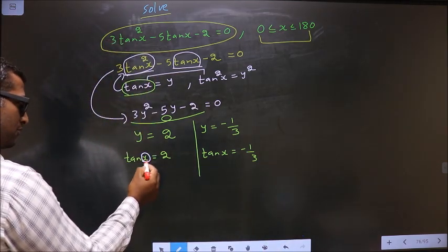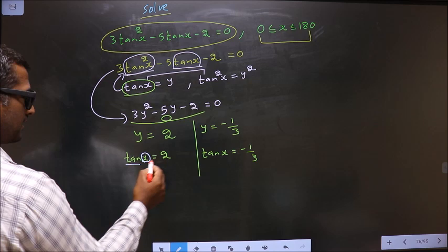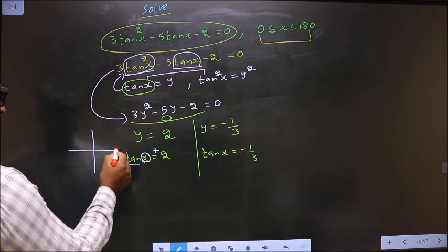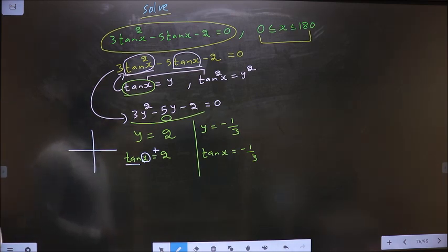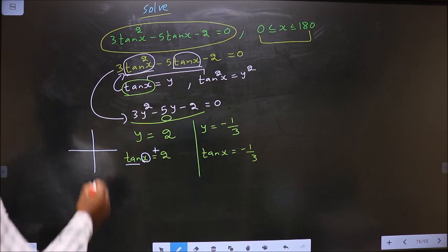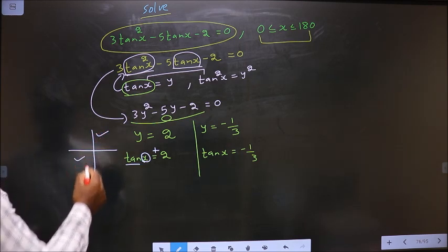Now to get the values for x, here it is tan and here it is positive. So now you check in what all quadrants is tan positive. It is all silver teacups. Tan is positive in the first and in the third.